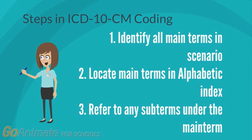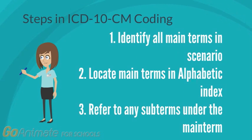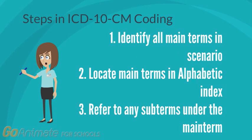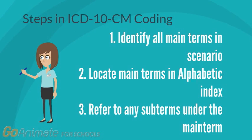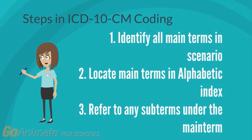Let's review the steps in ICD-10 CM. We first find the main terms in our diagnostic statement of coding. We then locate those main terms in our alphabetical index, followed by finding the subterms under the main term in our index.